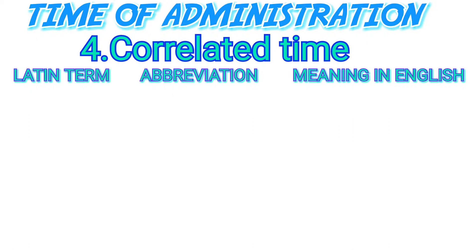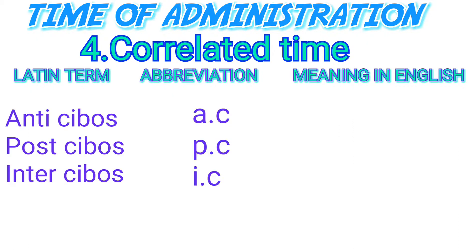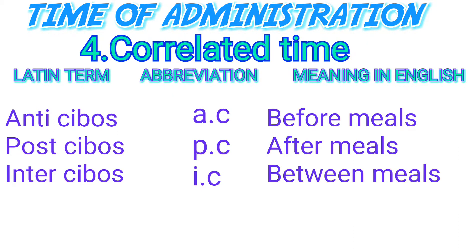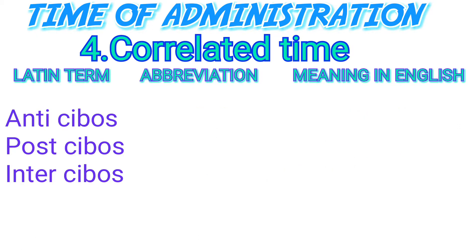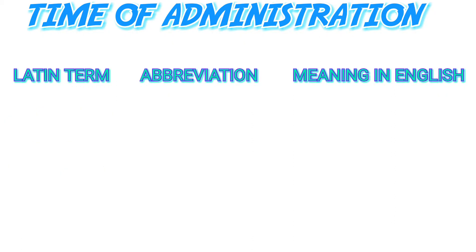This next category is probably the most important one, and there are three Latin terms to learn. 'Ante cibos,' abbreviated AC, means before meals. 'Post cibos,' abbreviated PC, means after meals. 'Inter cibos,' abbreviated IC, means between meals. So AC, PC, and IC — if you ever see these in a prescription, you should know what they mean.